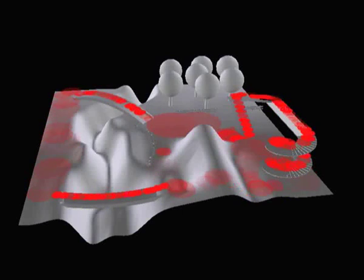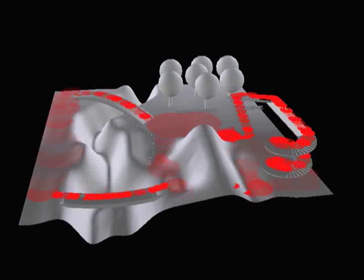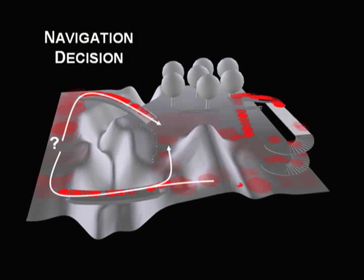The individual choice of the followed path, as well as the locomotion velocity, is deduced from the local population densities that are computed for each graph vertex.